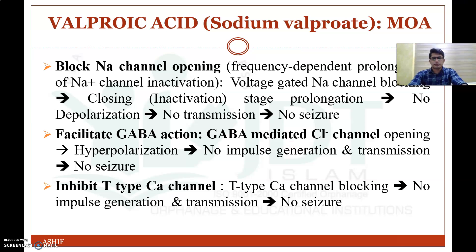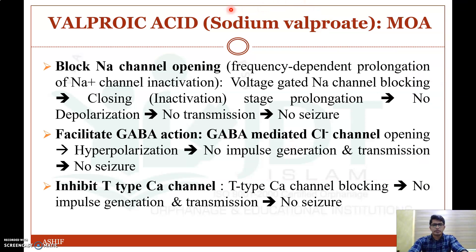The next class of drug is valproic acid. It is available as sodium valproate in different brand names like Valproate, Encorate, Chrono, etc. Coming to the mechanism of action, valproic acid acts at two synapses — inhibitory as well as excitatory — and has three different mechanisms. The first mechanism is that it will block sodium channel opening; it prolongs the inactivation stage of the sodium channel.